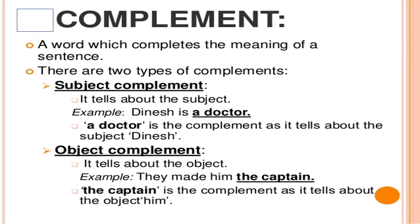Now, what is the complement of a verb? A word which completes the meaning of a sentence is called a complement. There are two types of complements — subject complement and object complement. If it is telling something about the subject, it is a subject complement. For example, 'Dinesh is a doctor' — 'a doctor' is the complement as it tells us something about the subject. Object complement tells something about the object. For example, 'They made him the captain' — 'the captain' is the complement as it tells about the object 'him'.